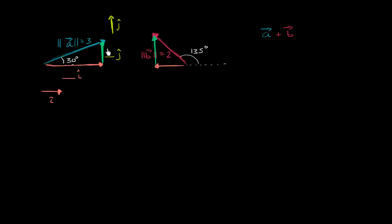For vector A, this is a 30-60-90 triangle. The vertical side — opposite the 30-degree angle — is going to be half the length of the hypotenuse, so half of 3, which is 3 over 2. The horizontal side is going to be square root of 3 times the shorter side, so 3 times square root of 3 over 2. That comes directly from the properties of 30-60-90 triangles.